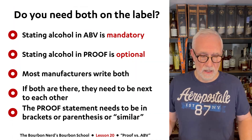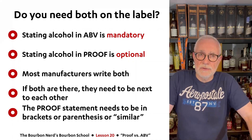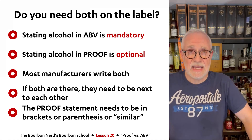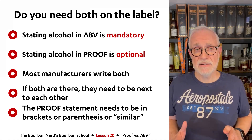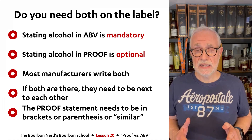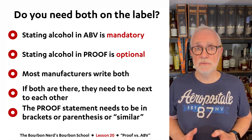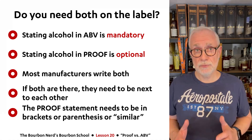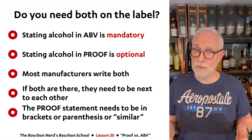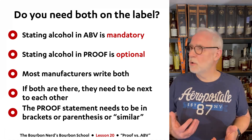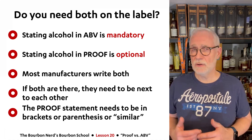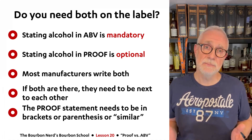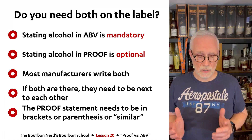So do you need both on the label? This is actually where it gets a little bit interesting. Stating ABV is mandatory in the US — it is illegal to only indicate proof. You have to put ABV on the bottle. You can also put proof on, of course, but that is optional. I would say that most manufacturers — I've seen a few that only write ABV — but I would say 90-plus percent of all manufacturers actually put both numbers on the label.